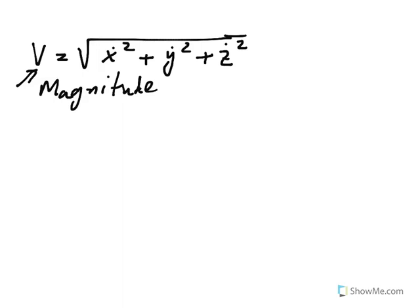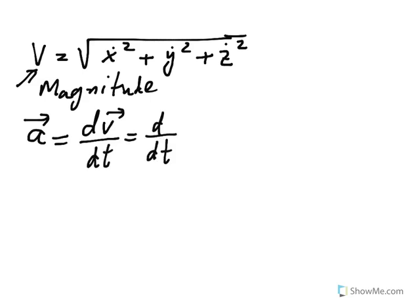Now, we can go a step further and find acceleration. So, acceleration is the derivative of velocity. Now, remember, we just defined velocity in the last page. Velocity was x dot i, plus y dot j, plus z dot k.